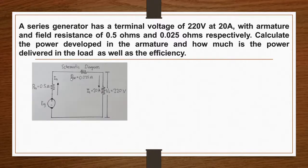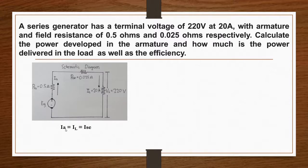This is our schematic diagram of our circuit. As we have noticed, since our diagram is a series connection, therefore our current is the same throughout the circuit. So by inspection, we can say that Ia is equal to Il and equal to Ise.